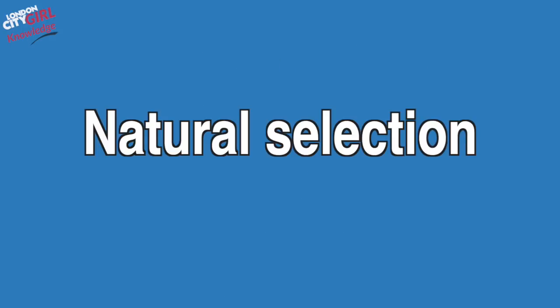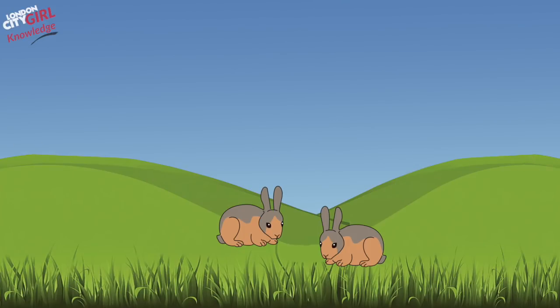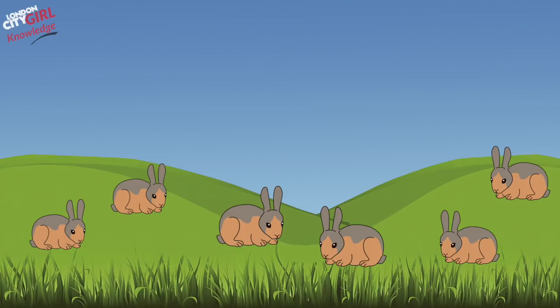When nature creates new species, it acts like the dog breeders, albeit over a longer period of time. Animals that have less desirable characteristics to survive in their environment are selected out by nature, leaving only the most suitably adapted to survive. These survivors then pass on their desirable traits to their offspring, and the process repeats over millions of years until a species becomes uniquely adapted to survive and thrive in their environment.